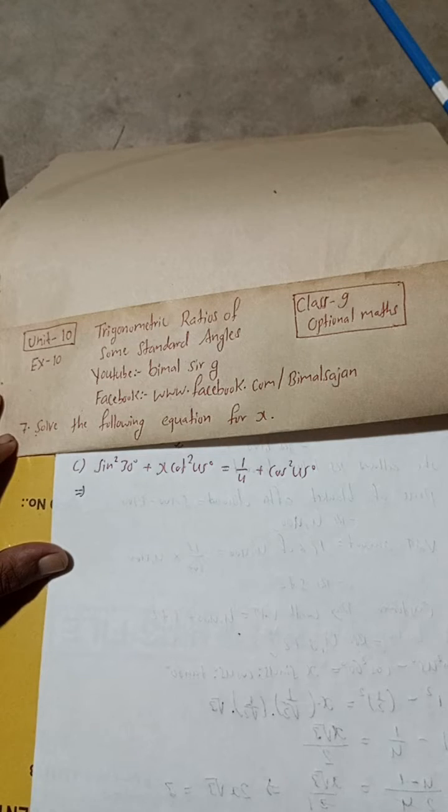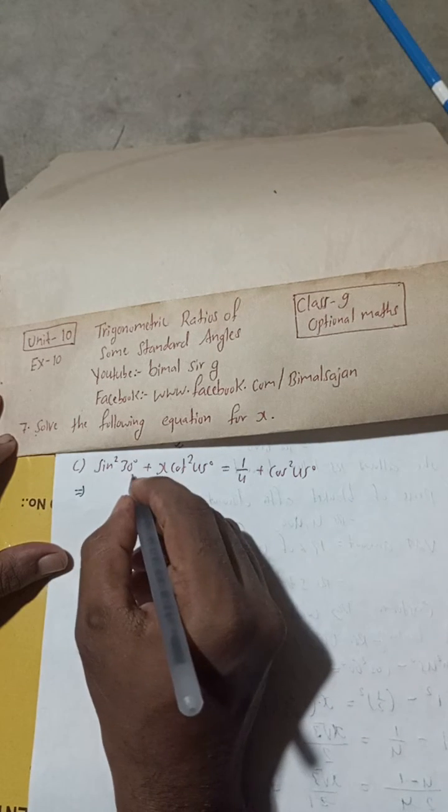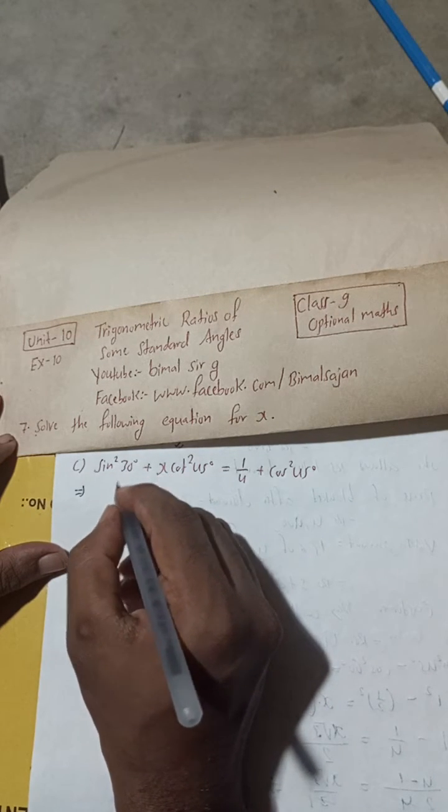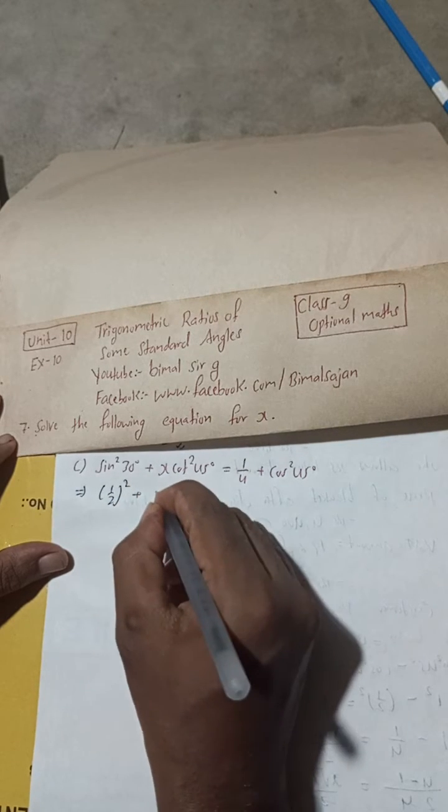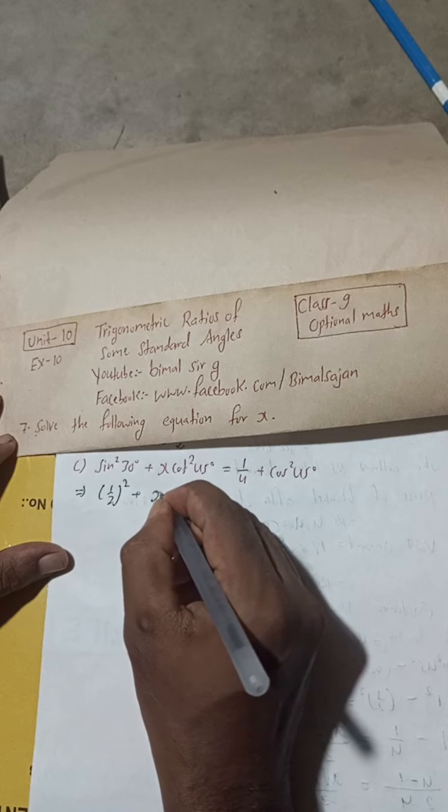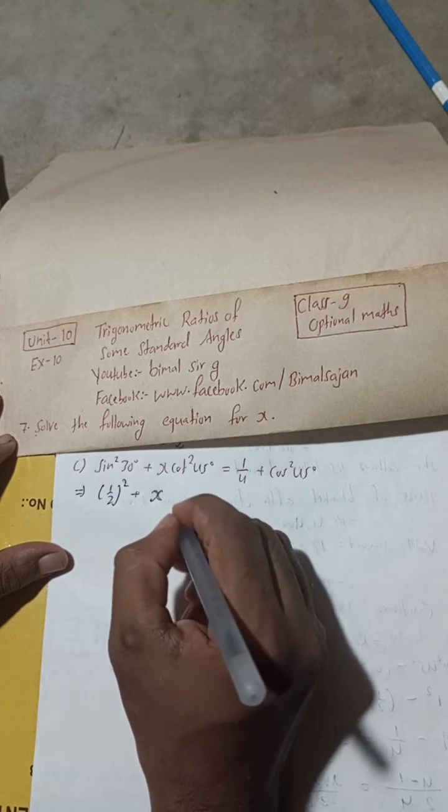This is here now, sine square 30 degree. So sine 30 degree is what? 1 by 2, whole square means square is plus, x as it is. Okay, x as it is.